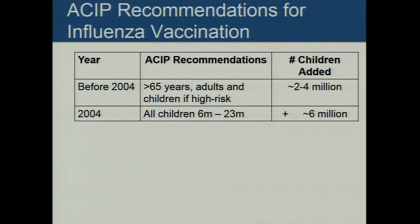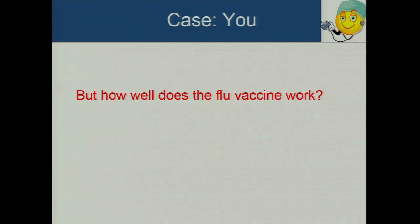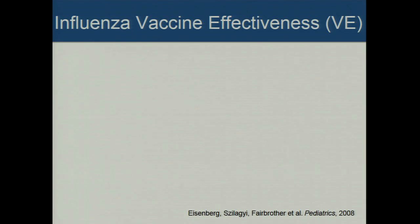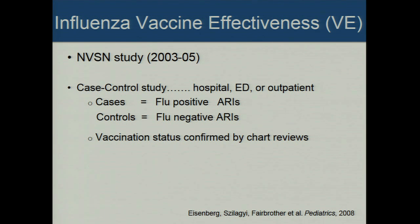These data, along with data from other studies, led to an expansion of recommendations to vaccinate all kids under 59 months of age, adding another 10 million kids to be vaccinated. Similar studies were done in following years, and then universal flu vaccination recommendations came into being. You may ask: how well does the flu vaccine work? Phase one through three trials address efficacy, but what about in the real world? A postdoc of mine, Kate Eisenberg, came up with a simple method to measure vaccine effectiveness using NVSN data.